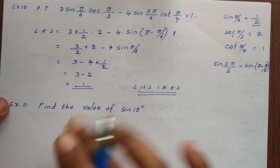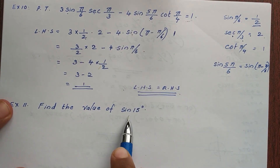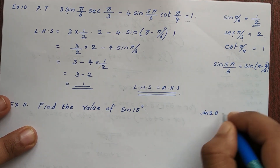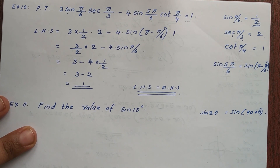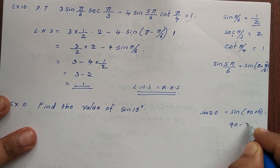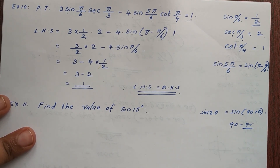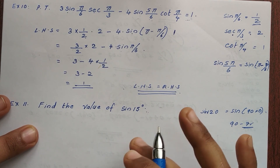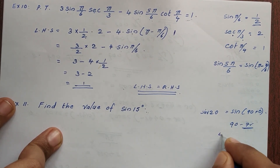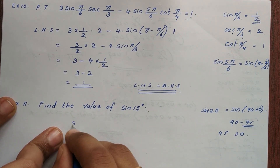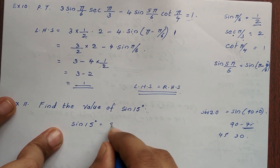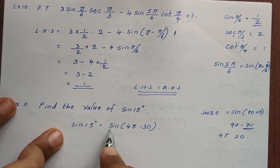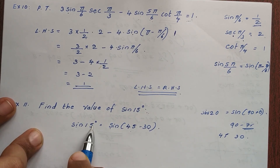Now let's look at another part. We need to find sin(120°) and sin(90° + θ). We want sin(15°). We can write 15 as 45 minus 30. So sin(15) = sin(45 − 30).